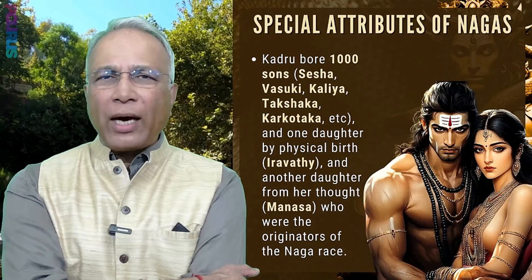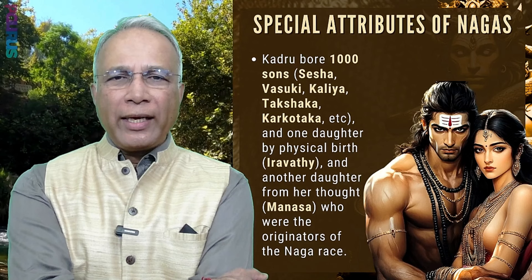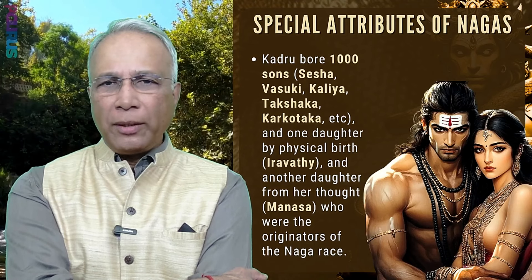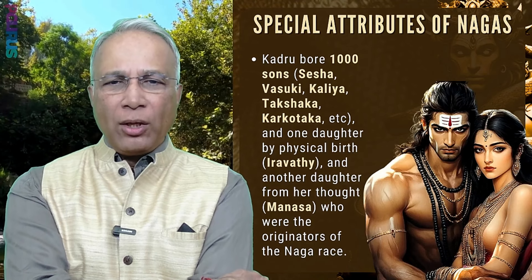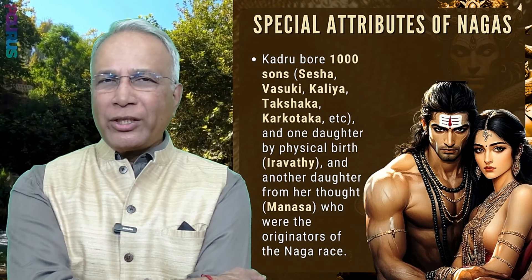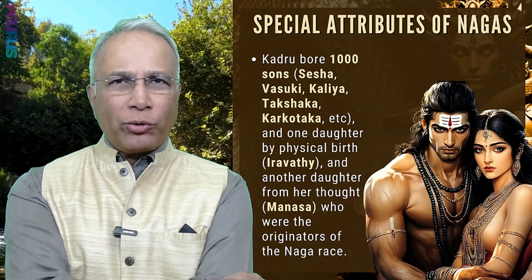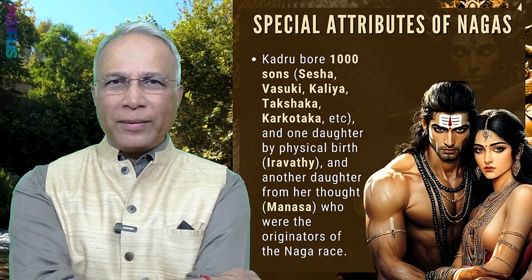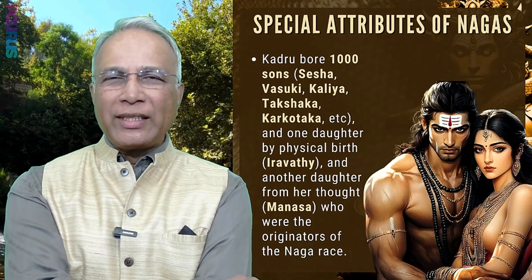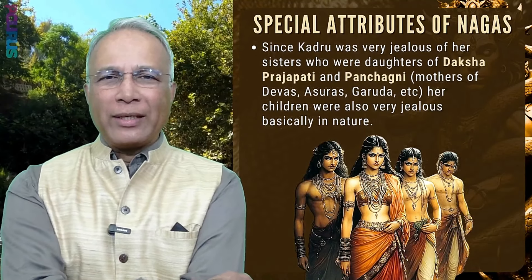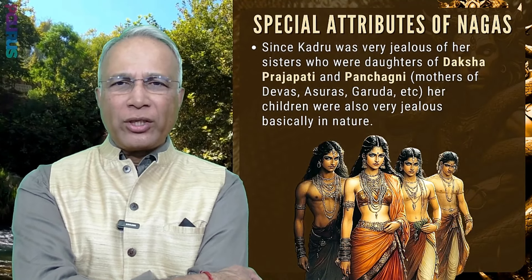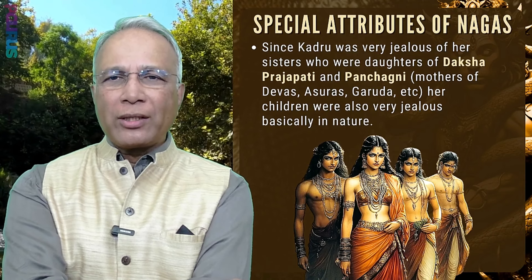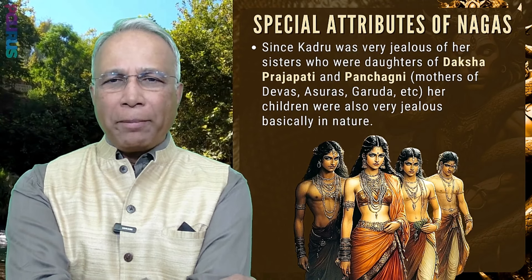Kadru bore a thousand sons such as Sesha, Vasuki, Kalia, Takshaka, Karkotaka, and others — and one daughter by physical birth, Airavati, and another daughter from her thought, Manasa — who were the originators of the Naga race. Sesha and Vasuki you may know who they are associated with. Hint: Vasuki is the snake that is with the Guru of the Saptarishis. Since Kadru was very jealous of her sisters — daughters of Daksha Prajapati and mothers of Devas, Asuras, Garuda, etc. — her children were also very jealous by nature.